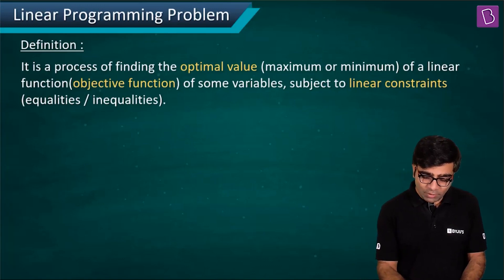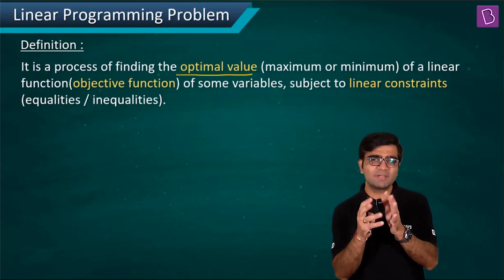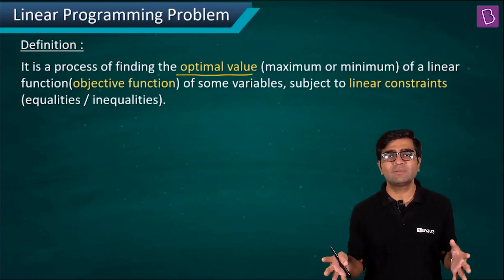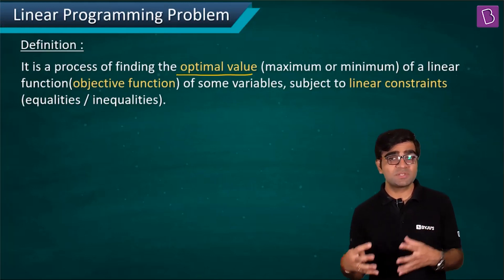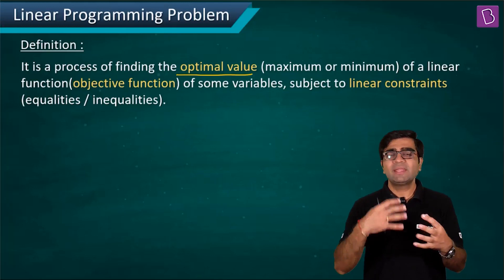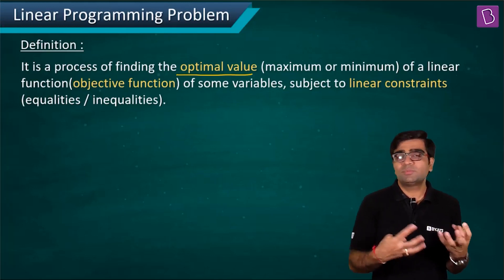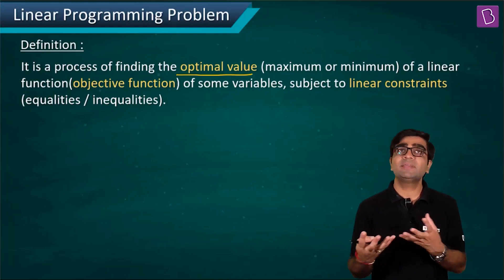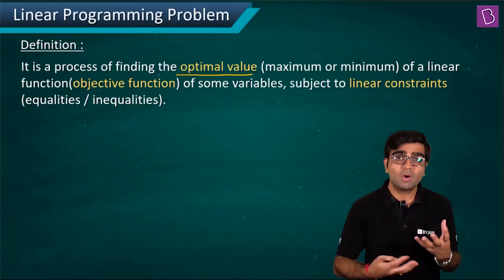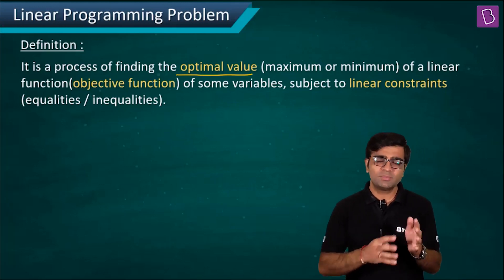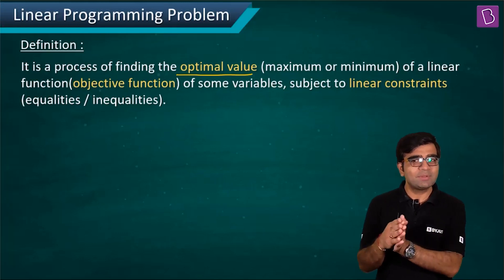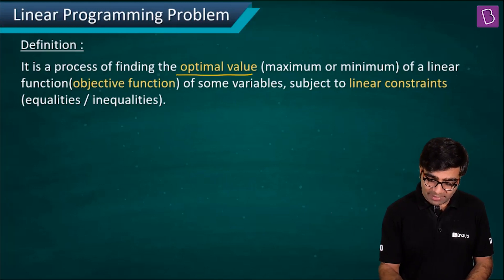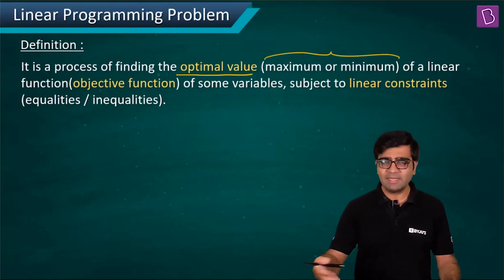You must have heard about the word optimization. In optimization, whatever the context, scenarios, and given circumstances are, we try to get the best out of them. In mathematics, we say we want to either maximize something or minimize something — maximize the output or minimize the effort. So the optimization may result in maximizing or minimizing. The optimal value could be a maximum or a minimum value.